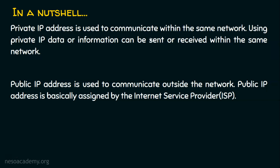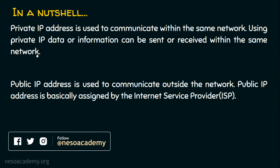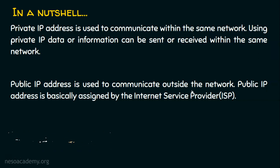In a nutshell, private IP addresses are used to communicate within the same network — data can be sent and received within the same network using private IP addresses. If you want your private network to communicate with the internet, you need a proxy server or NAT enabled in your network, which maps private IP addresses to public IP addresses. Public IP addresses are unique throughout the world and are used to communicate outside the network. Public IP addresses are assigned by the Internet Service Provider — you need to obtain and possibly pay for a public IP address to establish communication with the internet. I hope you enjoyed the lecture — thank you for watching, bye!